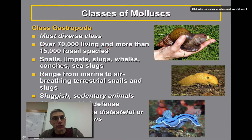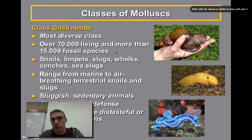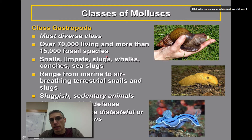Welcome back. This is going to be our third screencast for Chapter 16. At this point, we've looked at some general characteristics of mollusks. We had looked at the class Bivalvia, which includes things like the clams, the oysters, and the freshwater mussels that you guys have dissected in class.